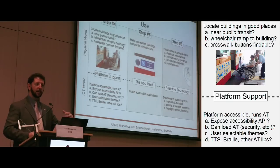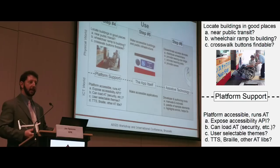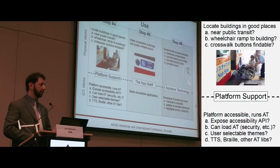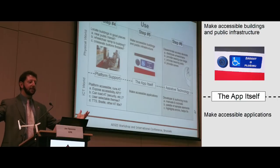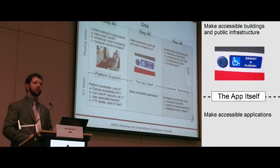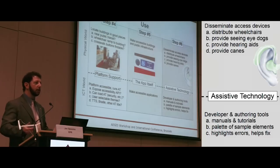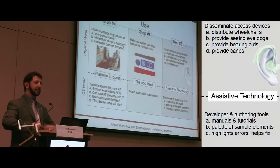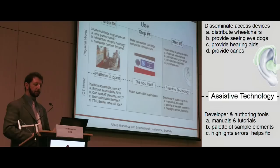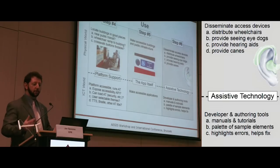Can that assistive technology get access to running applications via the security policy of the platform? We, of course, need accessible buildings, accessible applications — step five — and then step six. We need to disseminate the devices that people use. A wheelchair accessible building is of no use if nobody has wheelchairs. We need to disseminate the wheelchairs, the hearing aids, the canes to people who are blind. We need to disseminate the assistive technologies — the screen readers, screen magnifiers, and on-screen keyboards. Without those, the otherwise accessible ICT isn't helpful to the disabled person.